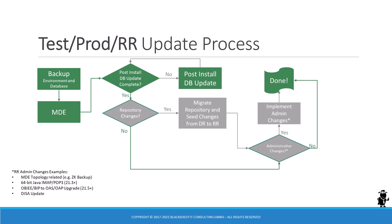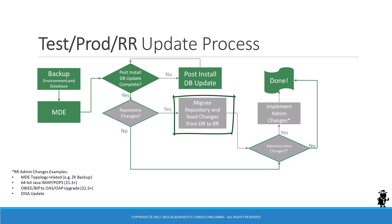The same is true for test or production — also known as RR environments — where the update process is a little shorter. The mandatory steps are the same: back up your environment, run MDE, run post-install database update. If there's nothing else to do, you're done. You have to repeat the update process for every Siebel instance. If the DR update included repository changes, you have to use the migration application to deploy the new and updated artifacts from the development environment to the runtime environment. You might also have some administrative changes on your checklist that you need to execute before declaring the update complete.